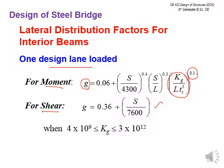When calculating KG — the equivalent moment of inertia of the beam considering different materials for slab and beam — its value must be between 4×10⁹ and 3×10¹². The expressions for two or more design lanes loaded are given in the next slide, with the same KG limitation. The distribution factor g is calculated and then multiplied with actual live loads to get equivalent loads placed along the member length.